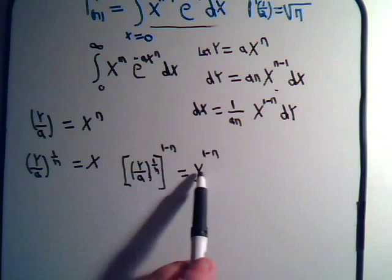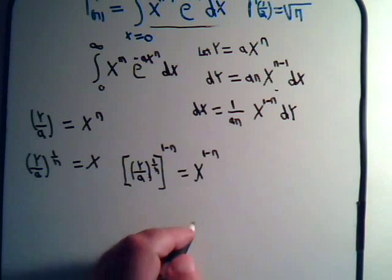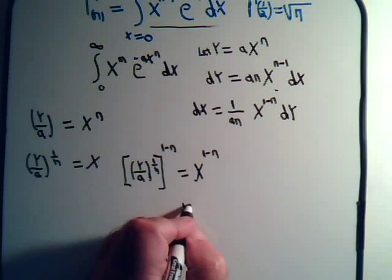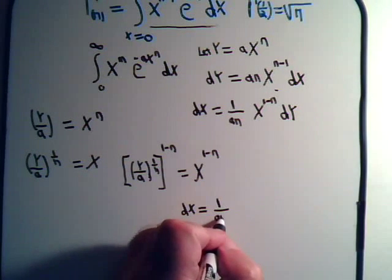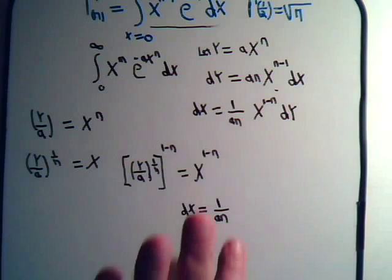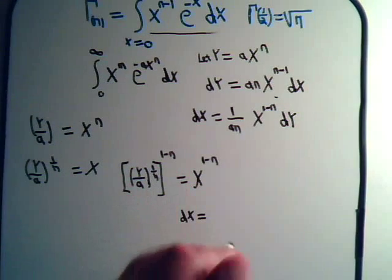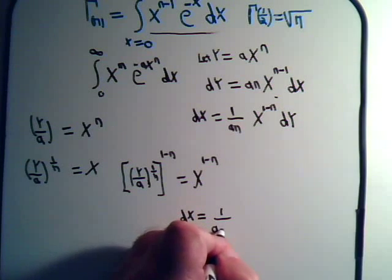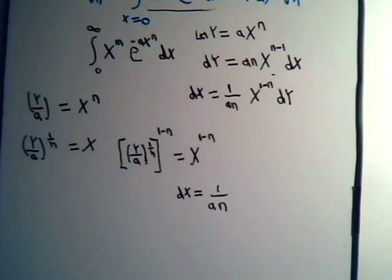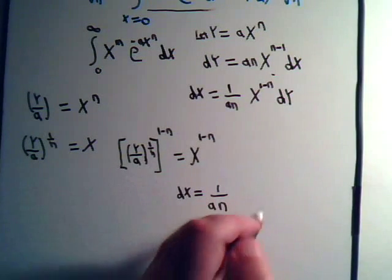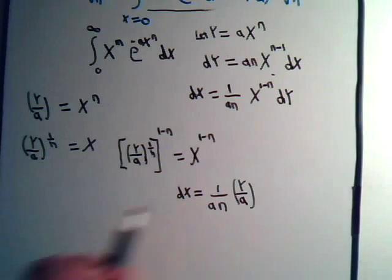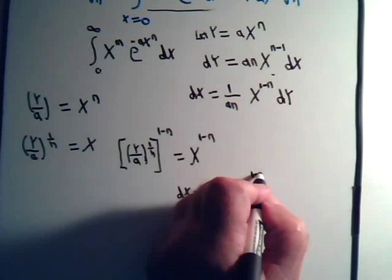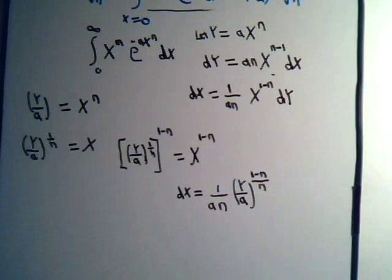So there's our expression for x to the 1 minus n. So we'll go back here and say dx will equal 1 over an. Let's write this a little neater here. 1 over a times n times this, which is y over a to the 1 minus n over n times dy.